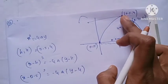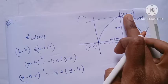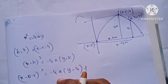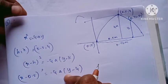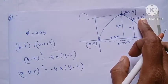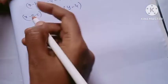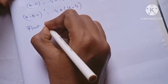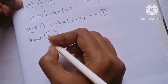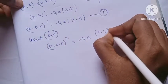We will find one point. The point is at the origin, which is (0, 0). Substituting x = 0 and y = 0: 0 minus 0.5 whole square equals minus 4a into 0 minus 4.